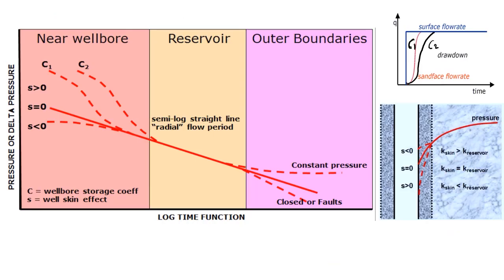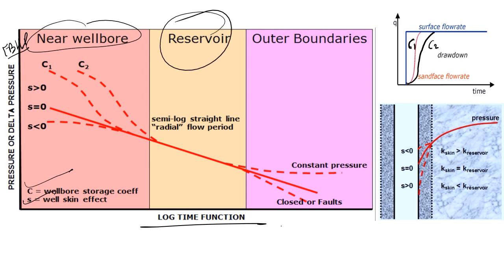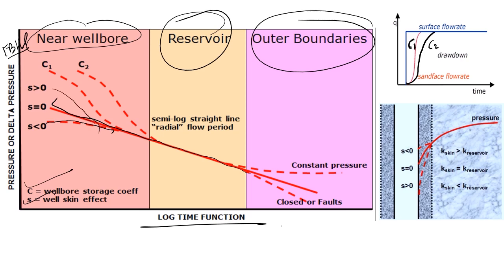On the semi-log plot of flowing bottom hole pressure versus log time, the near-wellbore region shows wellbore storage and skin effects, the mid-time region represents the reservoir, and the outer boundary indicates pressure support. For skin = 0, the ideal straight line is followed. For skin < 0 a different trend is followed, and for skin > 0 another trend results — deviations in the curve reflect the type and magnitude of skin.